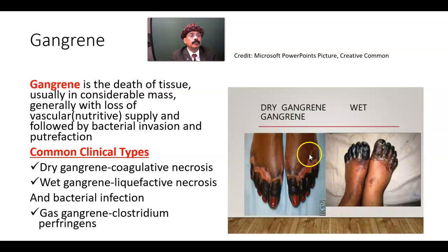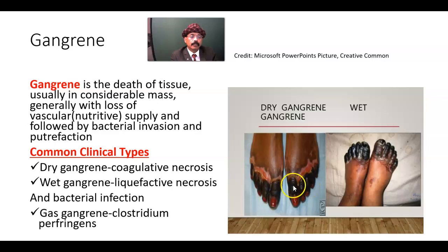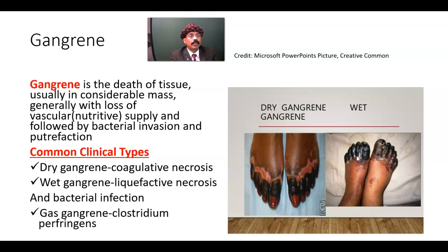In dry gangrene, there is usually a line of demarcation, and color is changed due to death of the cells. In wet gangrene, there is always bacterial infection; it is swelled up and represents some type of liquefactive necrosis.